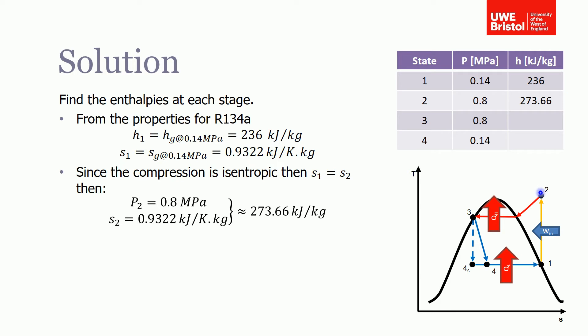To find the enthalpy at state 2, the way that we find that is we know what pressure it's at, but we don't know anything about its temperature, so it's difficult to find. So we find that from the fact that because we're assuming the compressor is isentropic.